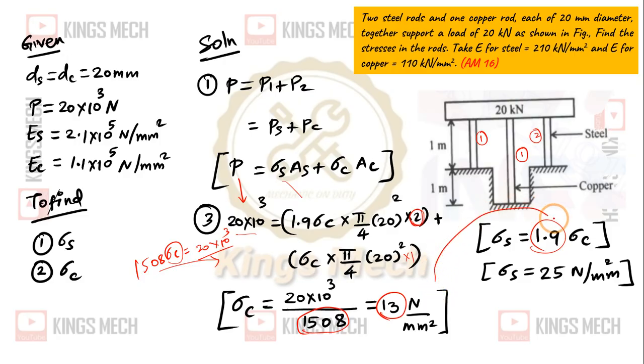So, substitute this value here. Sigma s equal to 1.9 sigma c. This is the value of 25 N per mm square. So, as per order, we will get sigma c value of 13 and sigma s value of 25 N per mm square.